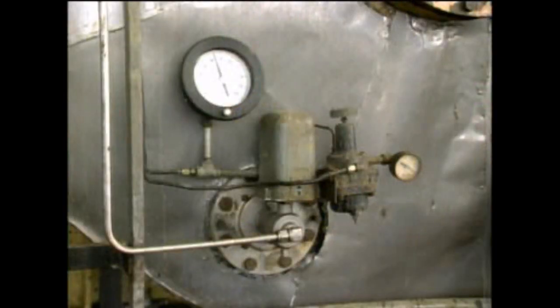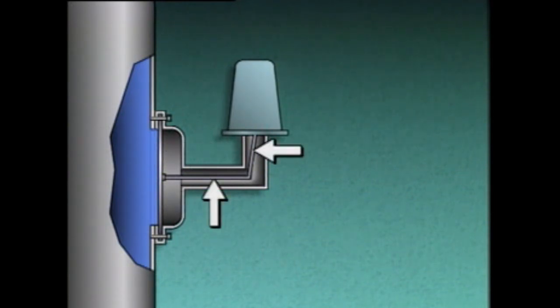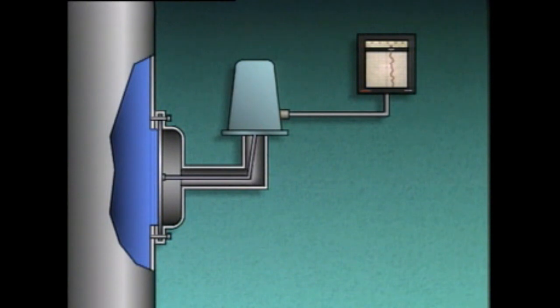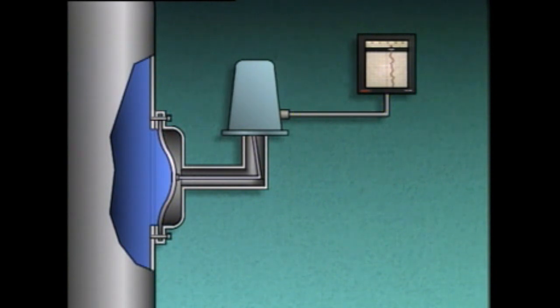Sometimes pressure indications need to be sent to other devices in remote locations, such as a recorder located in a control room. One device used for this purpose is a pressure transmitter. Here's a simplified illustration of a pressure transmitter installed on the side of a tank containing a liquid. A diaphragm pressure element is mounted onto the tank and connected through a mechanical linkage to the transmitter, which in turn is connected to a recorder. During operation, the liquid in the tank exerts pressure on the diaphragm causing it to bulge. The transmitter then transmits a proportional signal representing the pressure in the tank to the recorder, which provides the pressure indication.